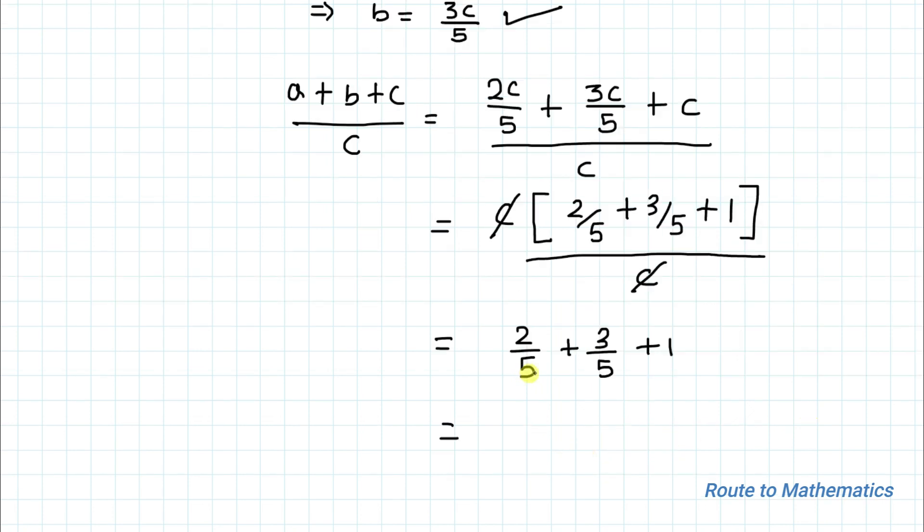You can see that in denominator we have 5 and 5. When the denominators are same we can directly add the numerators: that is 2+3 is 5, plus 1.